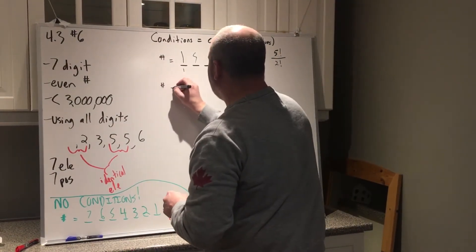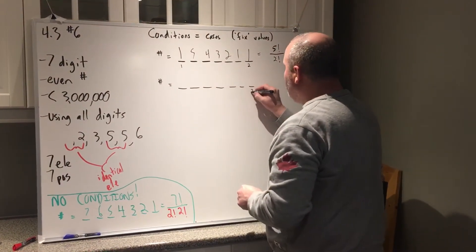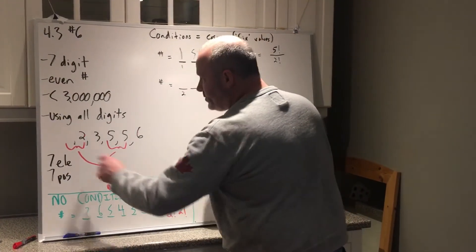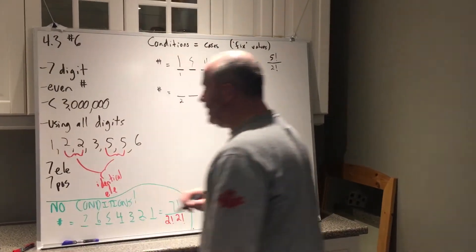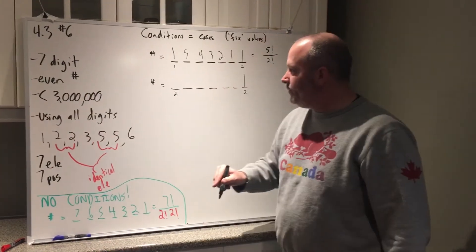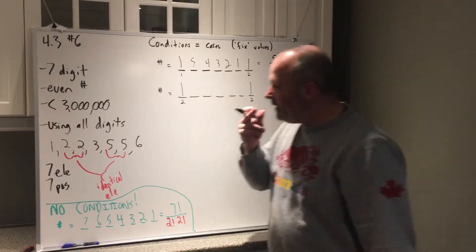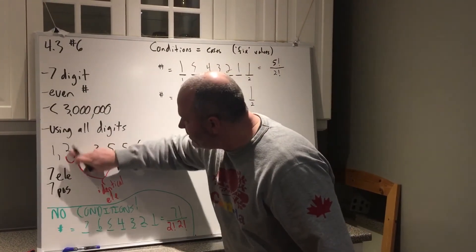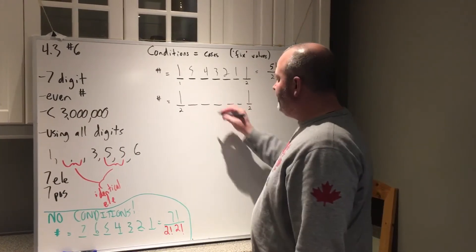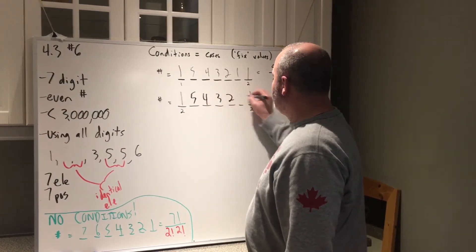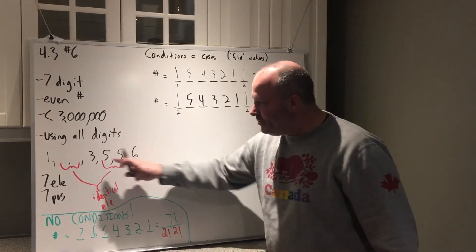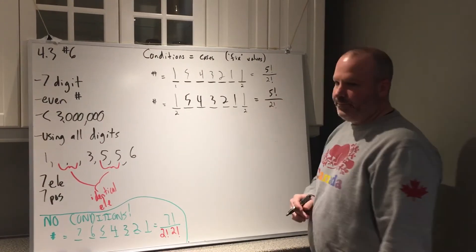We could also keep this as a 2, fix it in place. But this could also be a 2, because we have two 2s. We could have a 2 there and a 2 there. Fix this 2 in place, fix this 2 in place. And now we have 1, 3, 5, 5, 6. Five elements, five positions. 5 times 4 times 3 times 2 times 1, or 5 factorial. Now I still have the two 5s, so I've got to divide by 2 factorial.